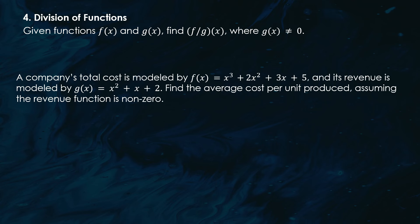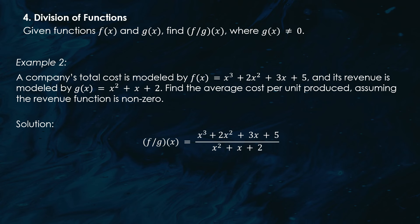Another division example: a company's total cost is modeled by f(x) = x³ + 2x² + 3x + 5 and its revenue by g(x) = x² + x + 2. To find the average cost per unit produced, assuming the revenue function is non-zero, we divide the total cost function by the revenue function: (f ÷ g)(x) = (x³ + 2x² + 3x + 5) ÷ (x² + x + 2). This expression represents the average cost per unit.